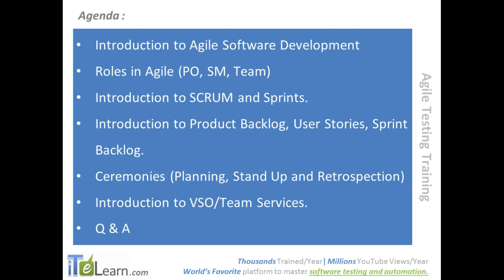We'll have a quick discussion around Scrum and sprints, and the different roles in Agile. Here we use slightly different terminologies — not project manager, developer, tester, or support engineer. The major roles are product owner, Scrum master, and the actual team — developer, tester, support engineer — everyone together is called the Scrum team. We'll discuss their roles and responsibilities during Agile development.